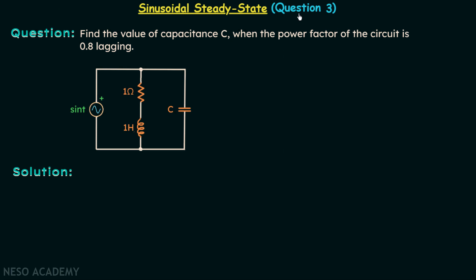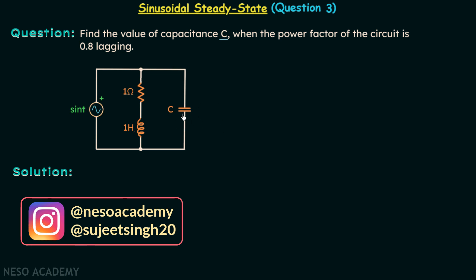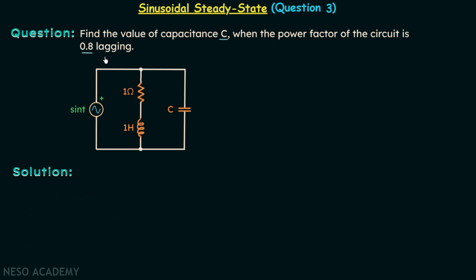We are going to solve question number three. We are required to find the value of capacitance C, where C is the capacitance offered by the capacitor present in this branch. The power factor of the circuit is 0.8 lagging, and we are required to find out the value of C.